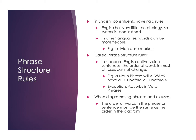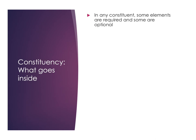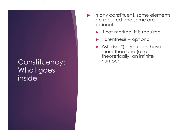When we think about what goes inside particular constituents, there are some things that are required and some things that are optional. If you don't see any sort of marking, it means it's required. If you find something in parentheses, it means it's optional. And if you find something with an asterisk, this means that theoretically you can have an infinite number of them — you can put more than one into that constituent.